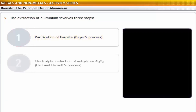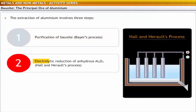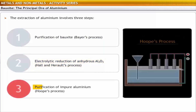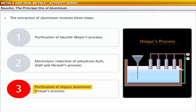Next, the electrolytic reduction of anhydrous Al₂O₃ by Hall and Herold's process. The last step is the purification of impure aluminium by Hoop's process.